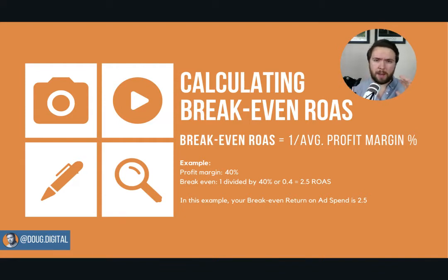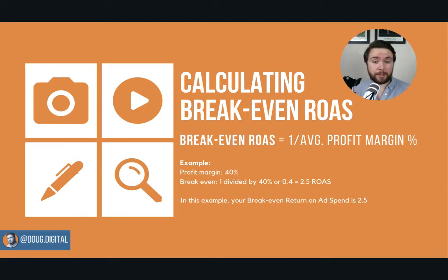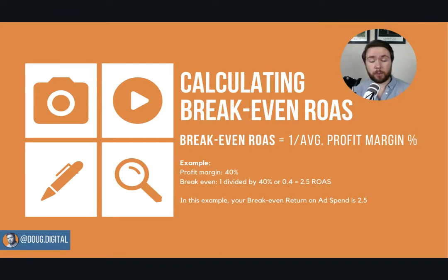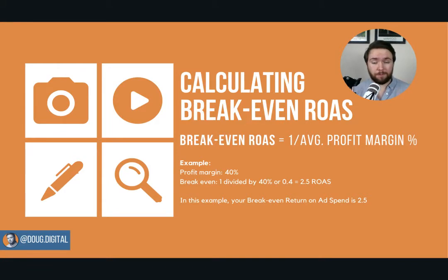Feel free to take a screenshot — mention me if you share it on social media or if you have any questions. So how do you calculate break-even? You start with the number one and you divide that by your average profit margin. For example, if you spend £100 and you make £40, that's your 40% gross profit.